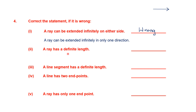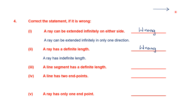Next statement: a ray has a definite length. Definite length is only when there are two fixed points. A ray has only one fixed point; the other end goes on, so it doesn't have a definite length — this statement is wrong. The correct statement is: a ray has indefinite length.